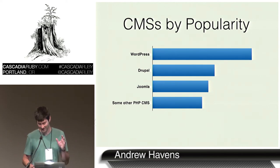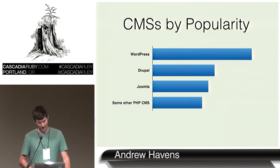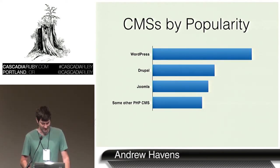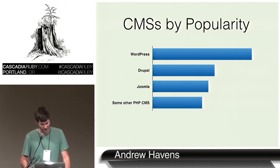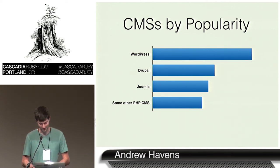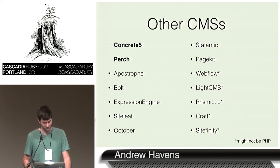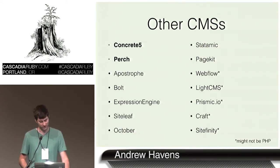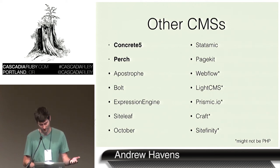Let's review this highly unscientific chart of the top CMSs. We've got WordPress, Drupal, Joomla, and some other PHP CMSs. I know these are obvious, and just because they're popular doesn't mean they're good examples of a CMS. WordPress is a blogging platform and for some reason it's the number one CMS. Most of these are popular because PHP is popular, but there are a lot of other CMSs written in PHP and a lot of them aren't half bad.